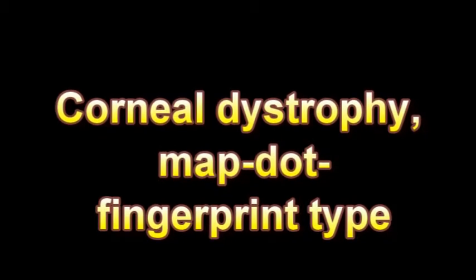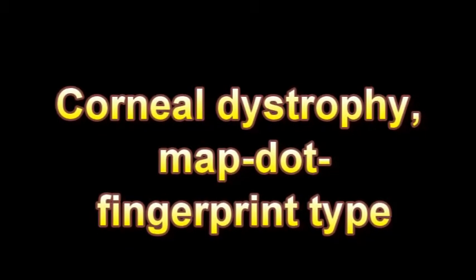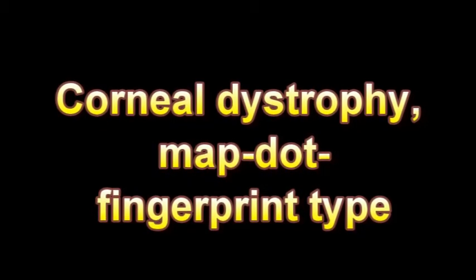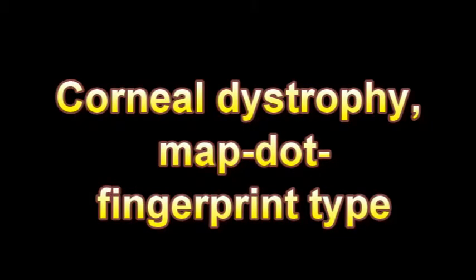A slit lamp is a device that focuses a high-intensity light beam as a slit while the examiner looks at the front of the eye through a magnifying scope. The disorder is usually silent and without symptoms. However, about one patient in 10 has recurrent erosion of the cornea that usually begins after the age of 30.